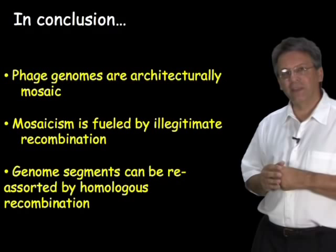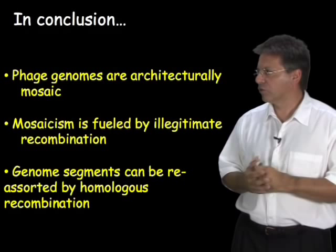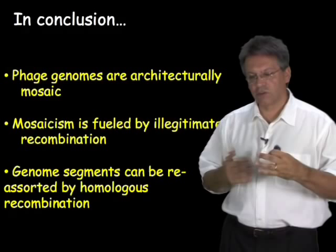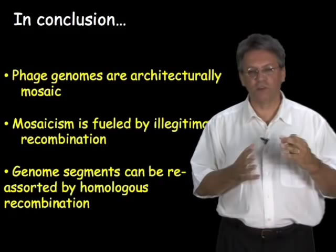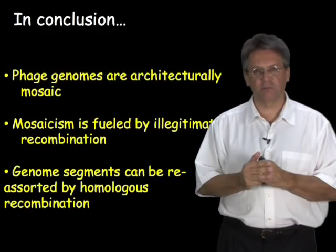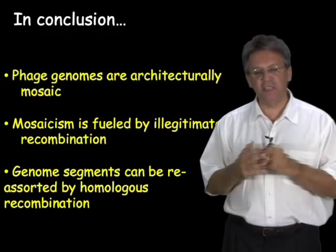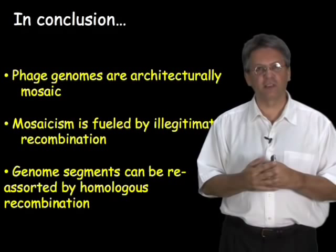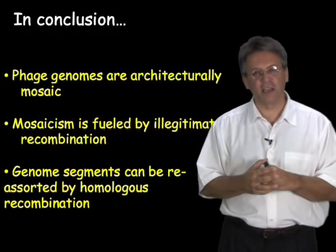So we can conclude from this genomic comparison of phages that phage genomes are architecturally mosaic, that mosaicism is fueled by the process of illegitimate recombination, and that genome segments can eventually be reassorted by homologous recombination once new joints between new genes are generated to form that mosaicism. In Part 3, we'll look at a particular case of the detailed analysis of bacteriophages that infect one particular common host, where all those bacteriophages can be argued to be potentially in genetic communication with each other, and we can explore what they look like and the insights they can give us in bacteriophage evolution.